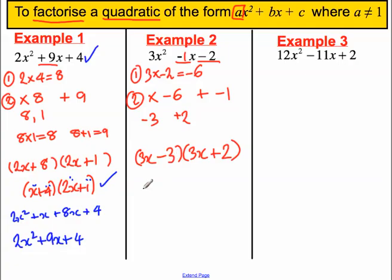So divide it out and write what you're left with after that division. So you'd be left with x minus 1, 3x plus 2, the factorised version.